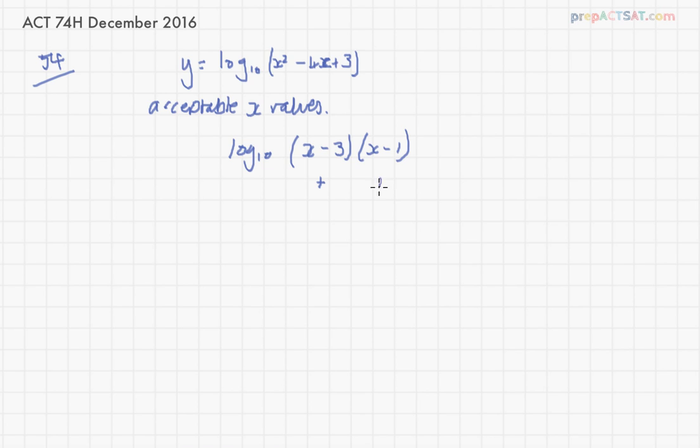So either they both have to be positive or they both have to be negative. If they're both positive, then that means x has to be greater than 3 and x has to be greater than 1. Now, if x is greater than 3, then we know it's greater than 1. So really, this is the restriction that counts here.